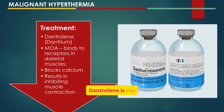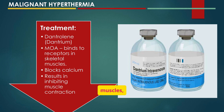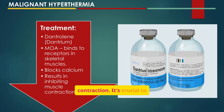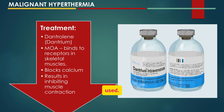Dantrolene is the primary treatment for malignant hyperthermia. It works by blocking calcium release in skeletal muscles, inhibiting muscle contraction. It's crucial to have dantrolene readily available in any setting where triggering anesthetics are used.